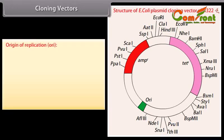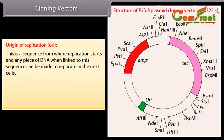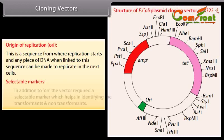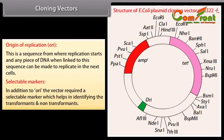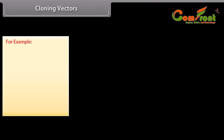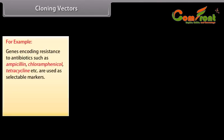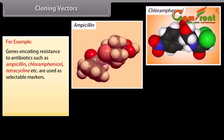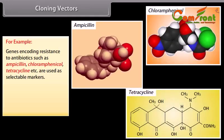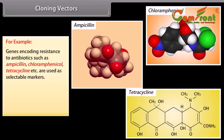Origin of replication (ORI): this is a sequence from where replication starts, and any piece of DNA when linked to this sequence can be made to replicate in the host cells. Selectable markers: in addition to ORI, the vector requires a selectable marker which helps in identifying the transformants and non-transformants. For example, genes encoding resistance to antibiotics such as ampicillin, chloramphenicol, tetracycline, etc., are used as selectable markers.